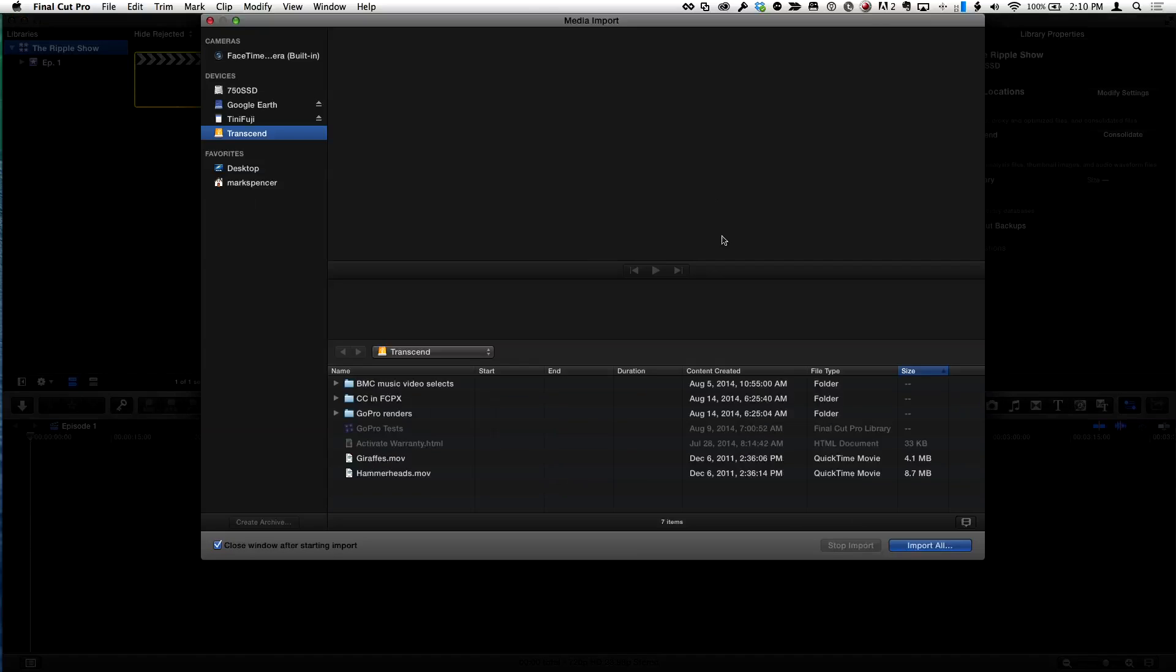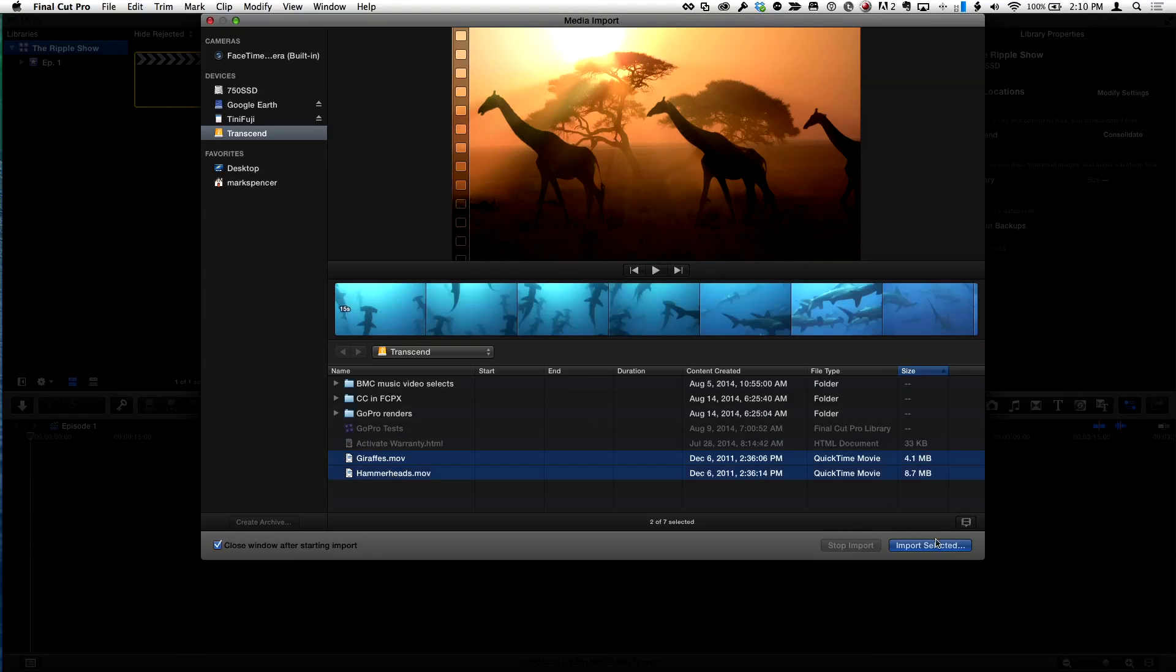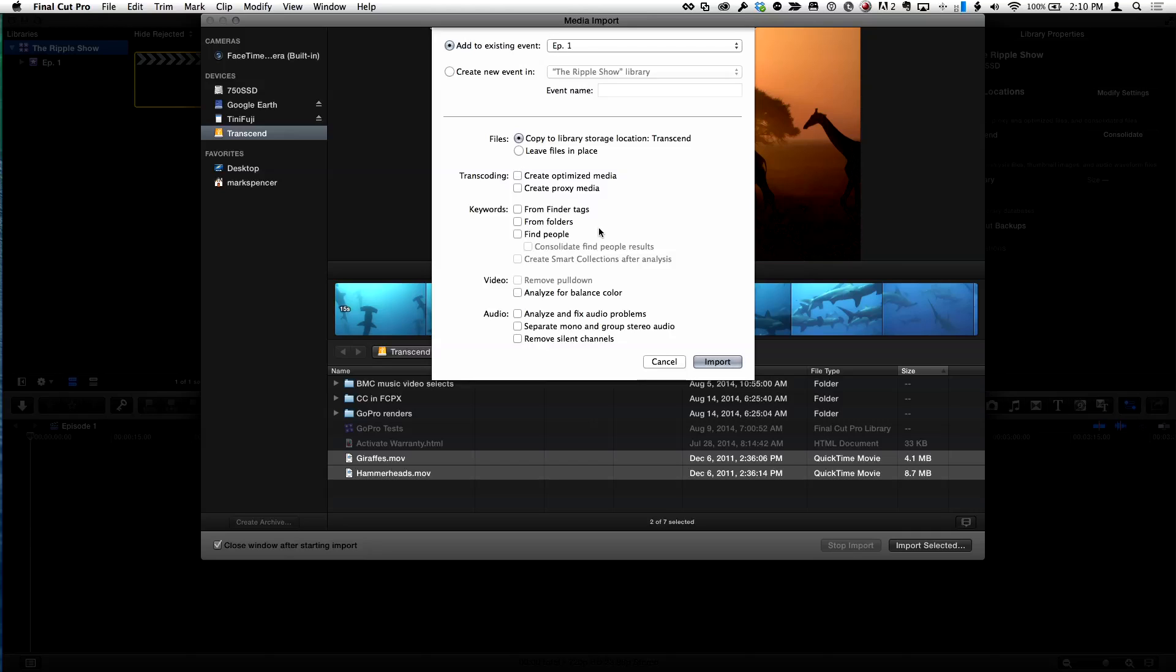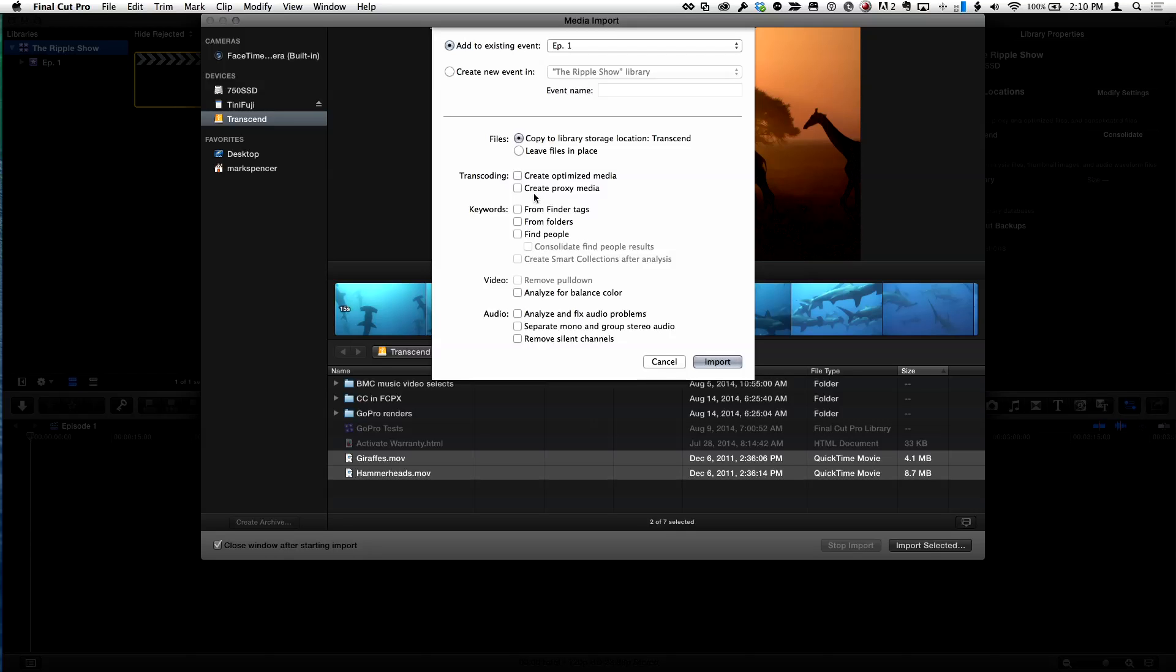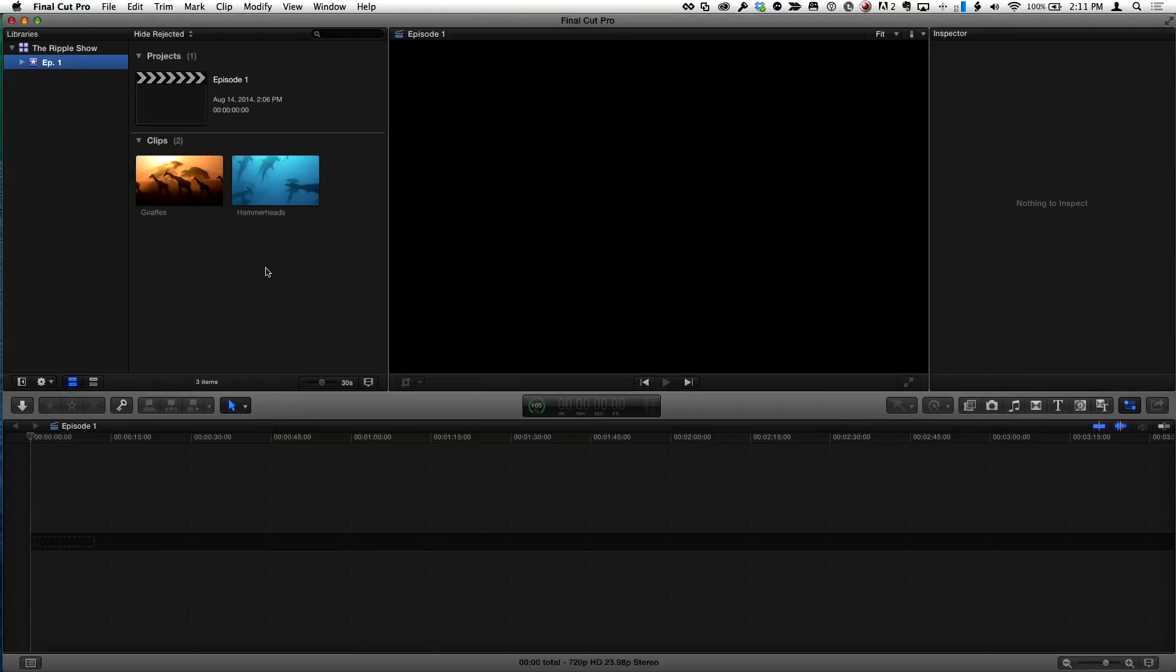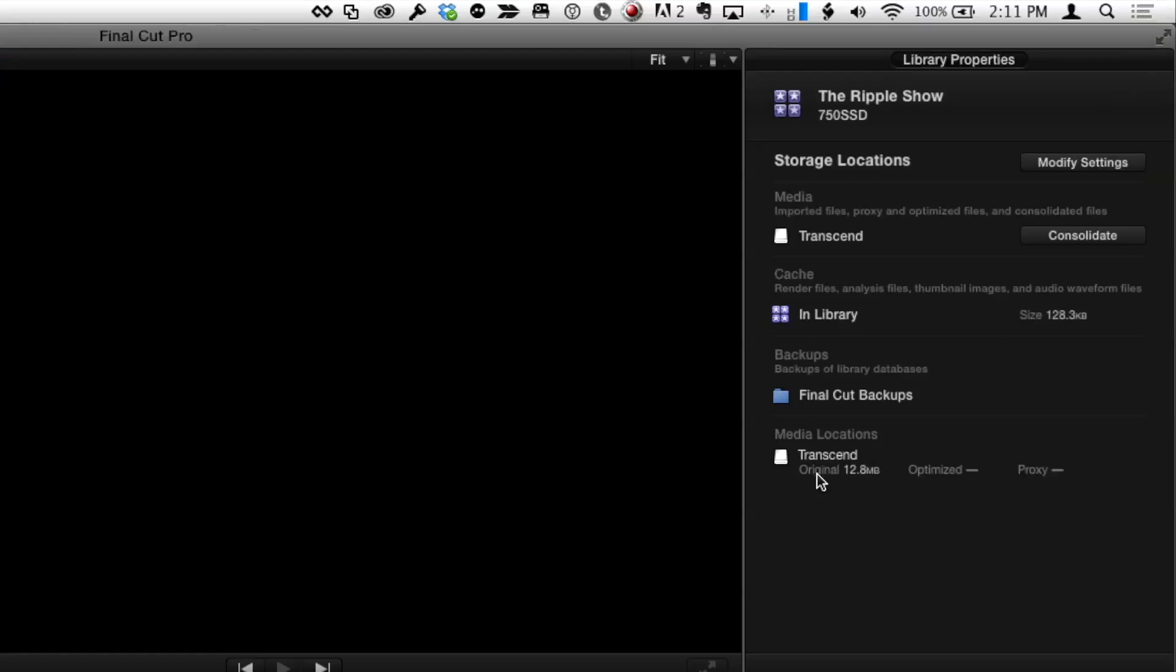Now any media that I import will go to that drive. I'll hit command I to import and select a couple clips. Now here's the key part to setting this up: I'm going to copy those to this drive. I could leave them in place, it doesn't really matter. If I needed optimized media I could check that if you're working with multi-cam or something. In this case I don't. The key is I am NOT going to choose to create proxy media right now, because if I did it would put that proxy media on that external location. I'm going to say import, and it brings those clips in. If I go back to the library inspector we can see under media locations that the media I've imported is all on that Transcend external drive. We can also see we don't have any proxy media.